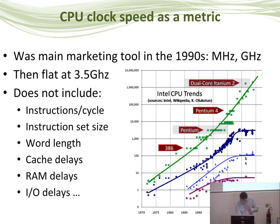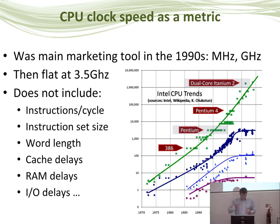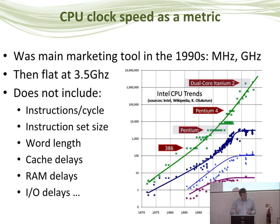Around the early 2000s, that all ground to a halt, and clock speed basically flattened off at around 3.5 gigahertz. This is due to fundamental limitations of physics — you could make clocks go faster, but your CPU would get hotter and hotter, consuming more and more energy that comes out as heat. You can already just about fry an egg on a modern CPU; if this had continued, things would have got up to the temperatures of rocket exhausts or the surface of the sun. So this all had to stop for very fundamental reasons.